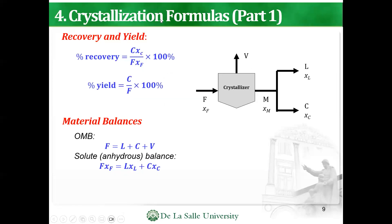To solve for recovery and yield — how much product we are getting — the percentage recovery is (C × X_C) / (F × X_F) × 100%. Looking at the overall material balance again: F = V + M, or equivalently F = V + L + C, since M = L + C.